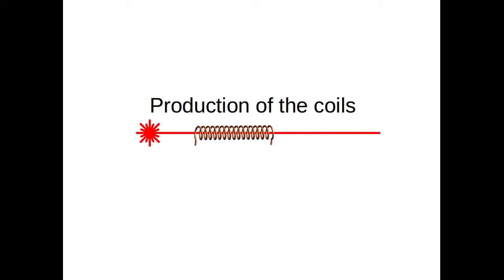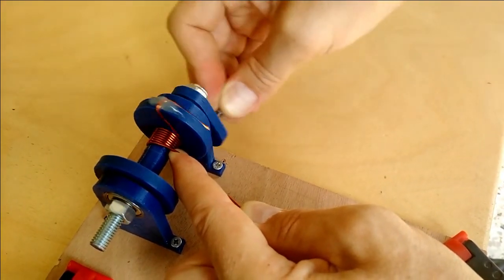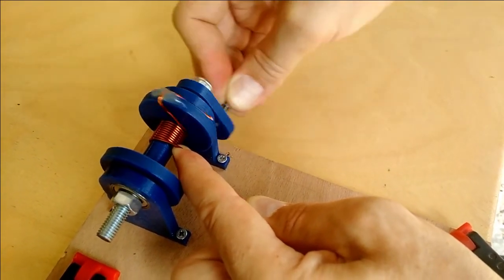For the production of the coils, firstly we 3D printed this winding rig so it can save us time on the winding.